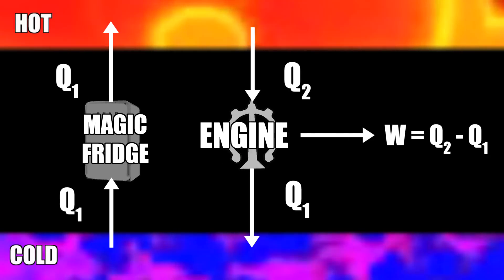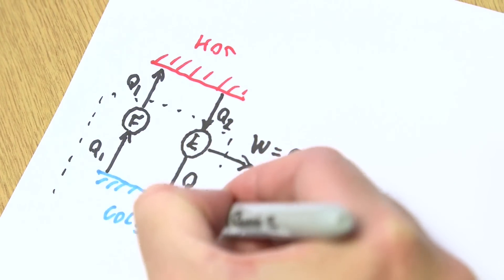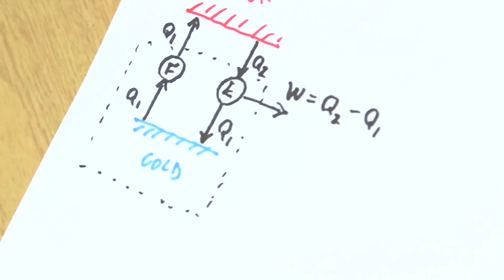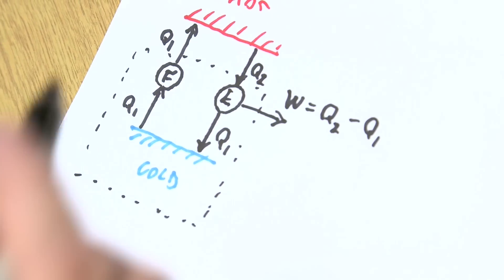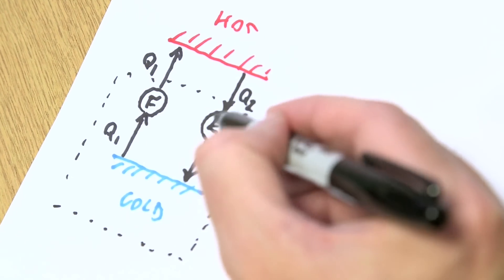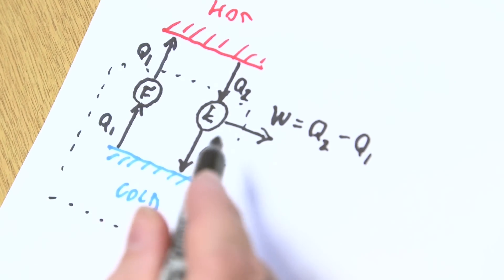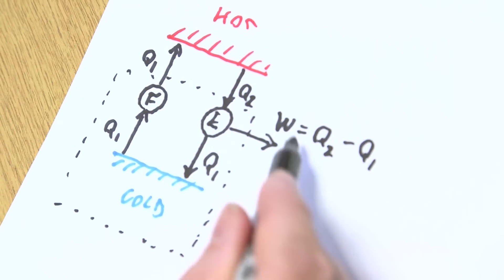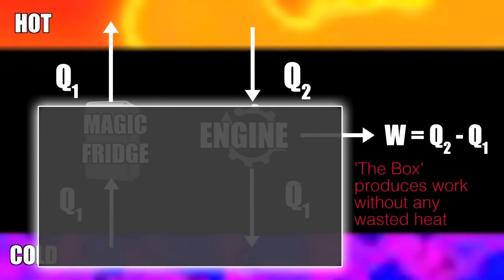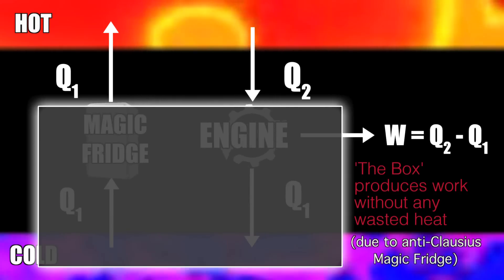Now, if we draw a box around all of this and don't care what's inside, that box takes heat out of the hot body — Q2 flows out and Q1 flows back in — so the net energy flowing out of the hot body is Q2 minus Q1. And the only thing coming out of the box is work, Q2 minus Q1. This now violates Kelvin's version of the second law, because all we've done is take an amount of heat out of the hot body and turn it directly into work.